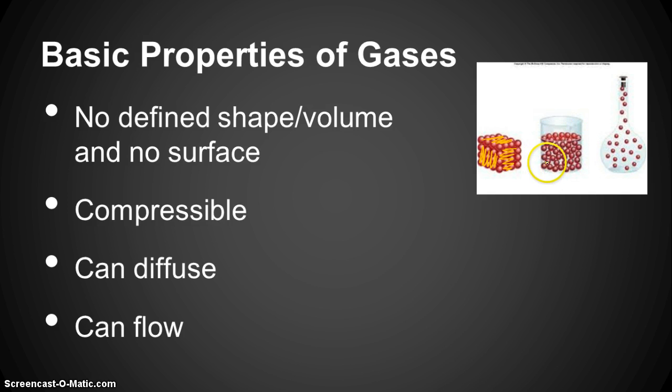Liquids do not have a defined shape. They can take the shape of their container, but they do have a defined volume, and that's because the particles are very closely attracted to each other. And because of that, they will always have a surface on the top. It's the only place that they'll have a defined surface, but they will have one on the top.